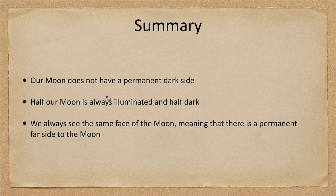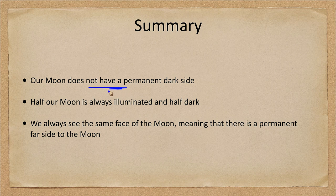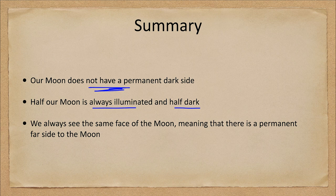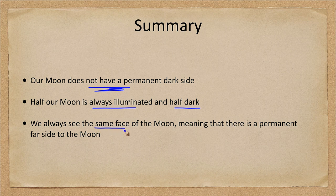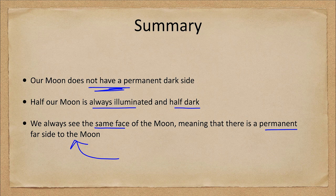So summarizing again here, we do not have a permanent dark side to the moon. Half is illuminated and half is dark, but that half changes over the course of the moon's orbit. However, we do always see the same face of the moon, meaning that there is a permanent far side to the moon.